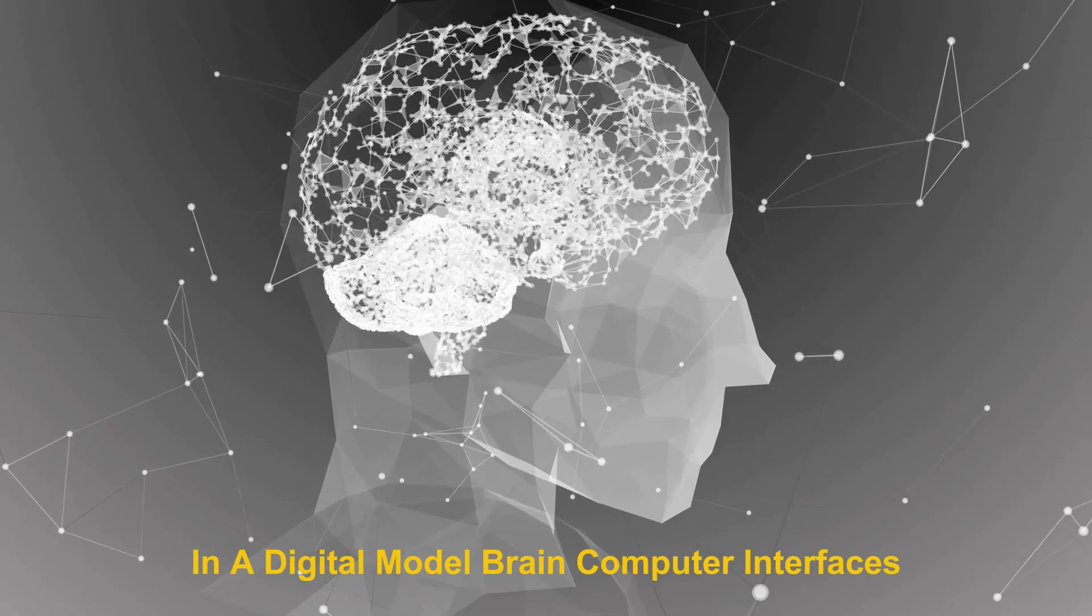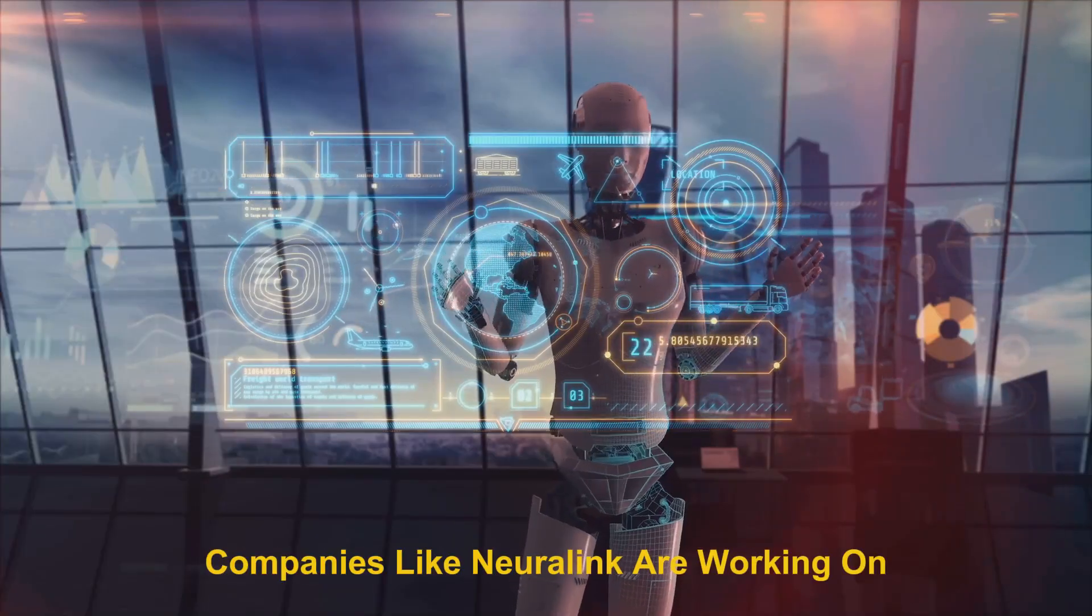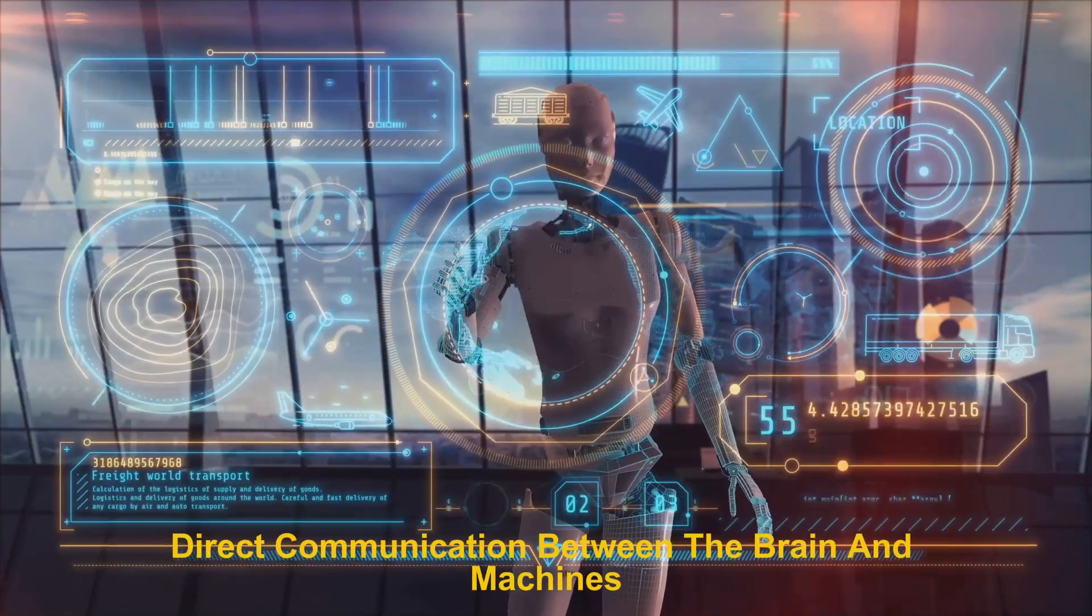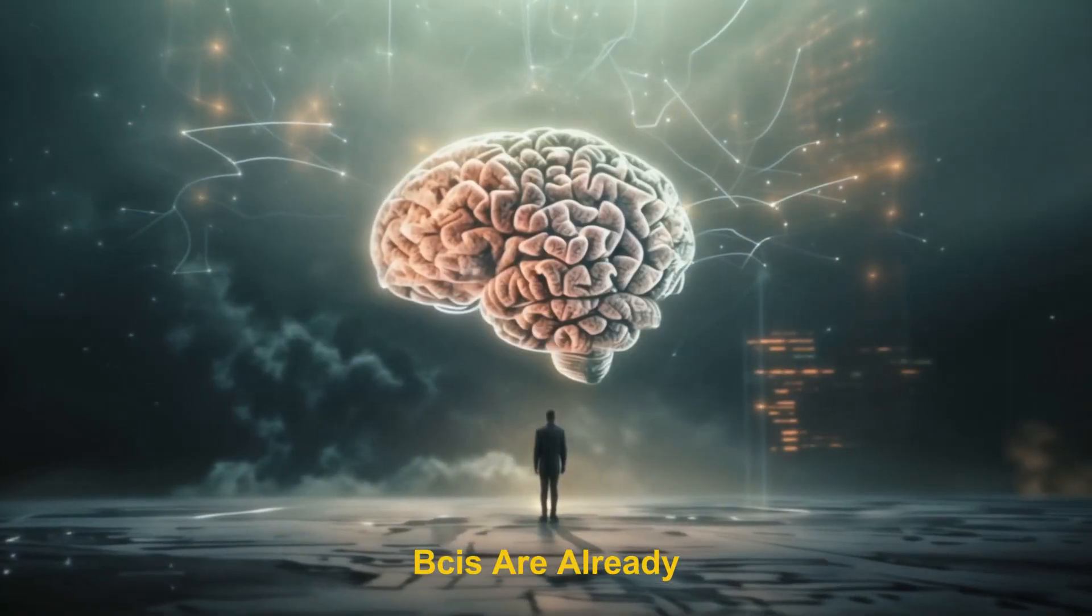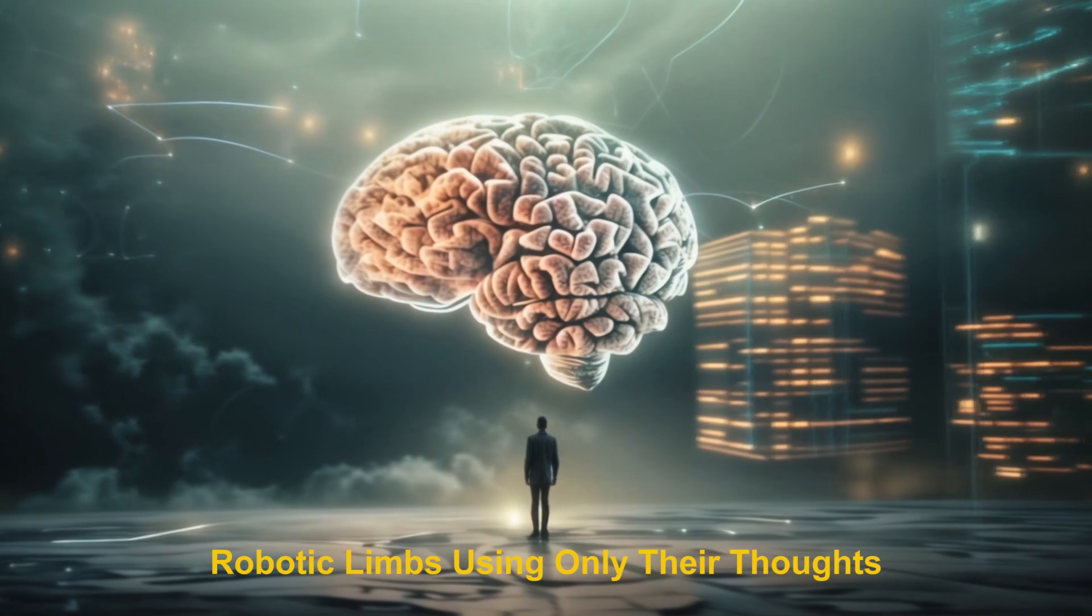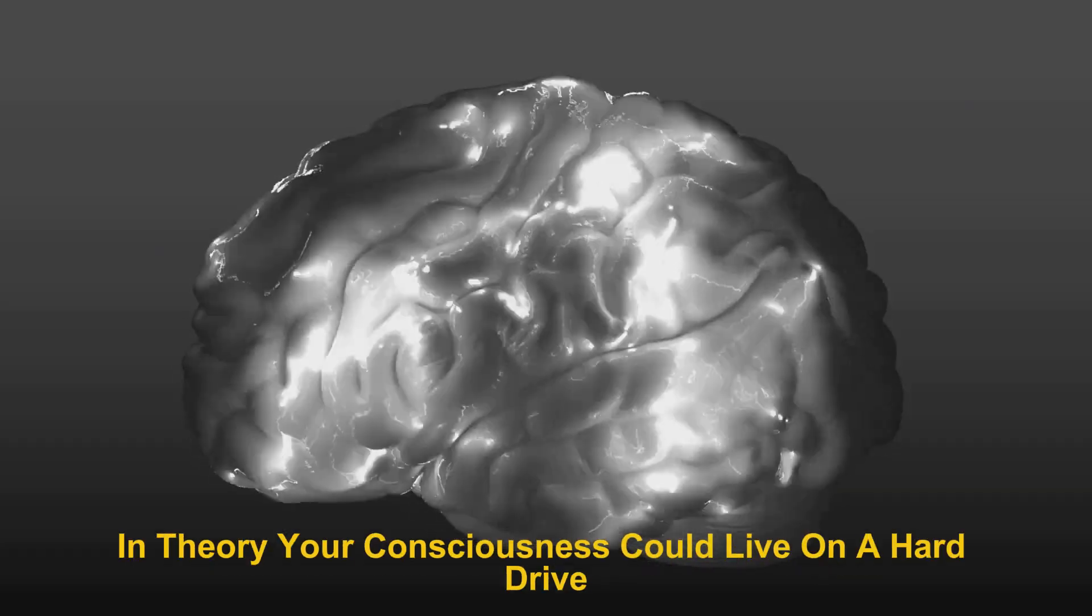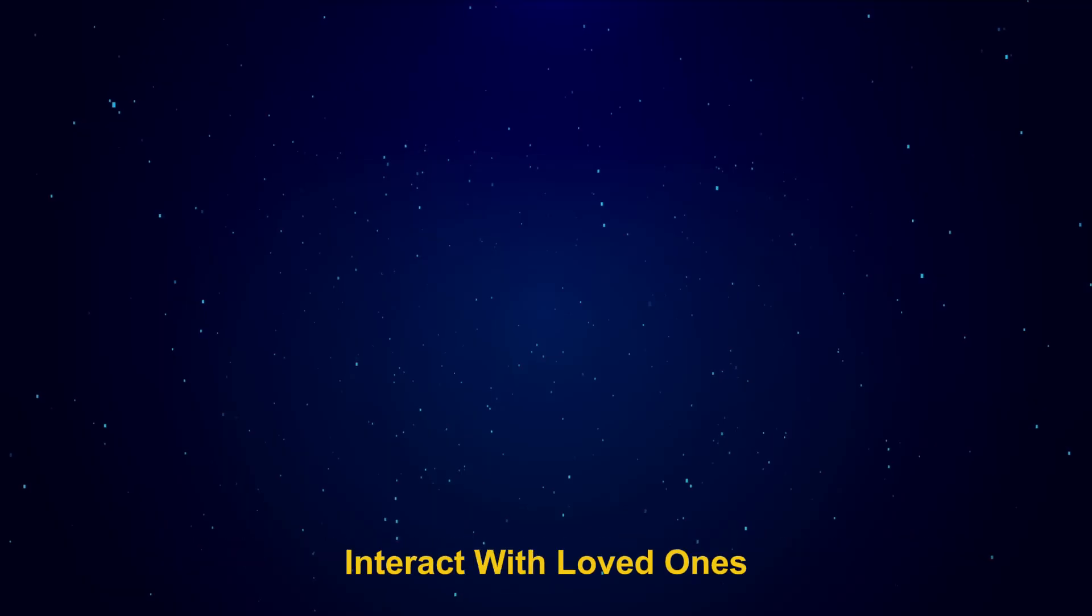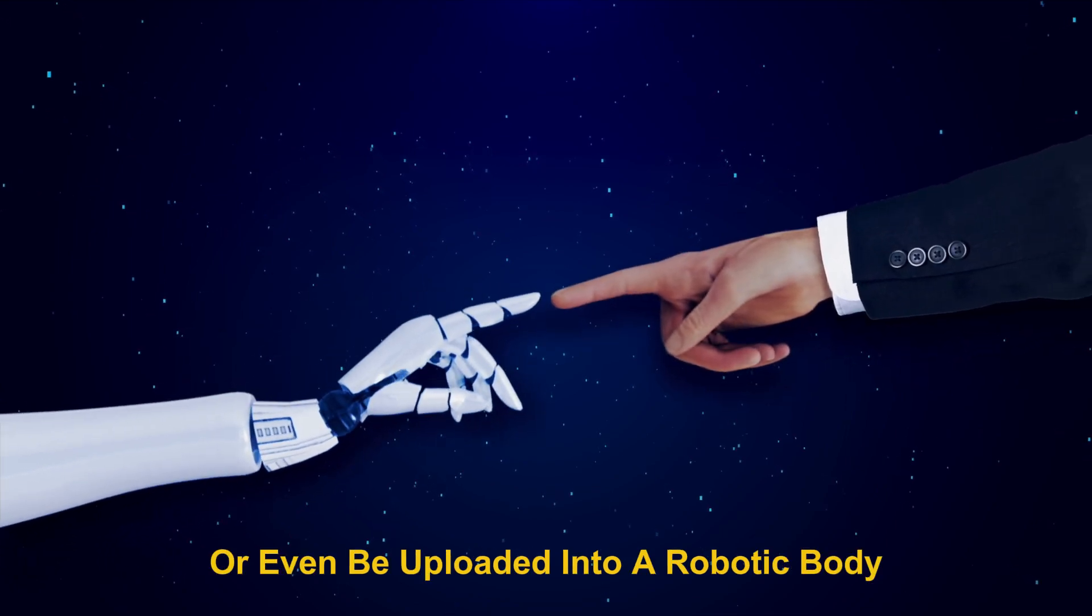Brain computer interfaces: Companies like Neuralink are working on direct communication between the brain and machines. BCIs are already allowing paralyzed individuals to control robotic limbs using only their thoughts. In theory, your consciousness could live on a hard drive, interact with loved ones, or even be uploaded into a robotic body.